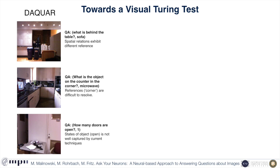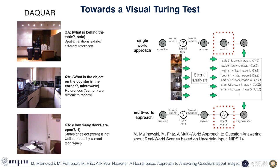We present an architecture to answer questions about the content of images, a challenging task that combines scene and language understanding and requires the system to respond to a wide range of natural language questions involving objects, attributes, spatial relations and counts.